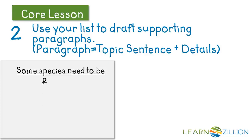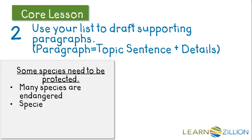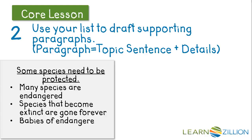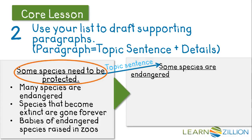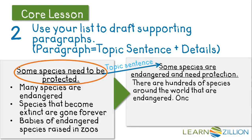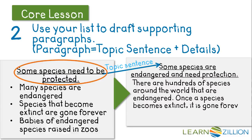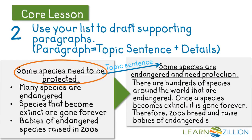Now I'm ready to move on to step two. Here's my first supporting reason: some species need to be protected. I've listed three bullet points: many species are endangered; species that become extinct are gone forever; and babies of endangered species are raised in zoos. I want my supporting reason to become a topic sentence: "Some species are endangered and need protection." Now I'm ready to draft supporting detail sentences: "There are hundreds of species around the world that are endangered. Once a species becomes extinct, it is gone forever. Therefore, zoos breed and raise babies of endangered species."